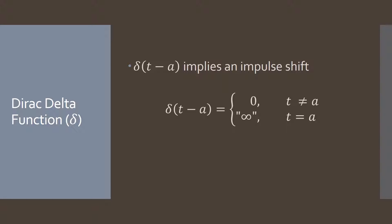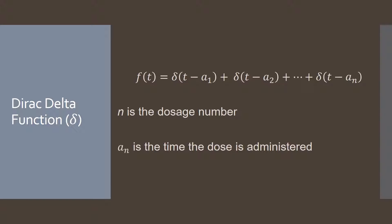When talking about δ(t - a), this implies a shift in where the impulse occurs — instead of the impulse occurring at zero, it happens at time a. For our purposes, F(t) represents the injections coming in, and we can model this as a series of delta functions. The first term, a₁, is where the first injection occurs; a₂ is where the second injection occurs. Here, n is the dosage number and aₙ is the time that the dose is administered.